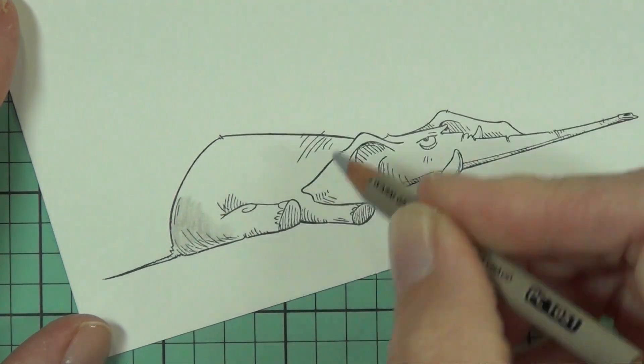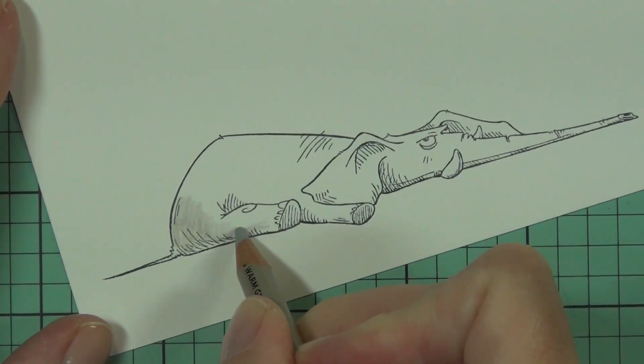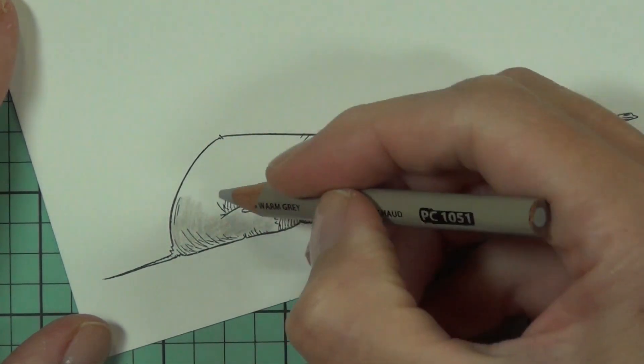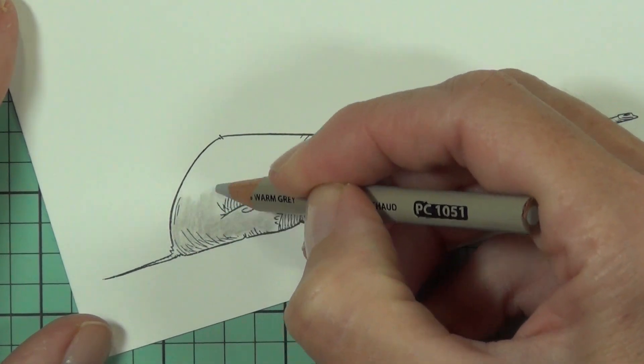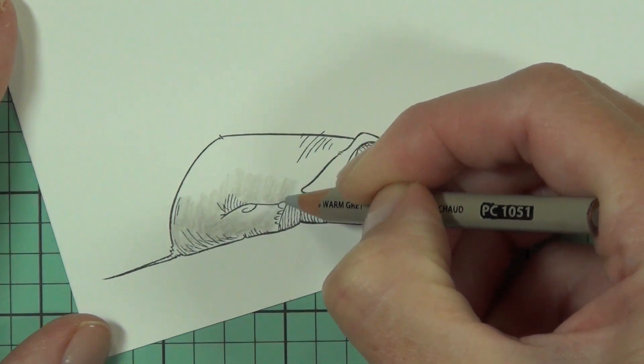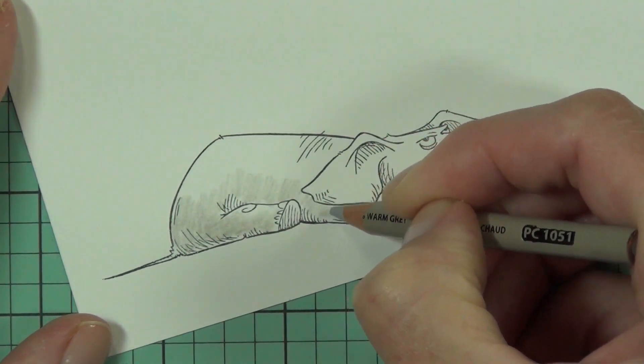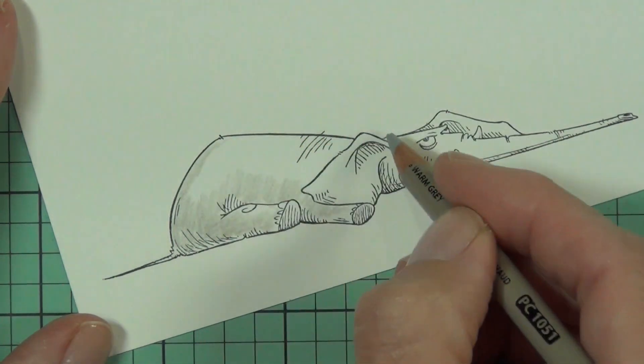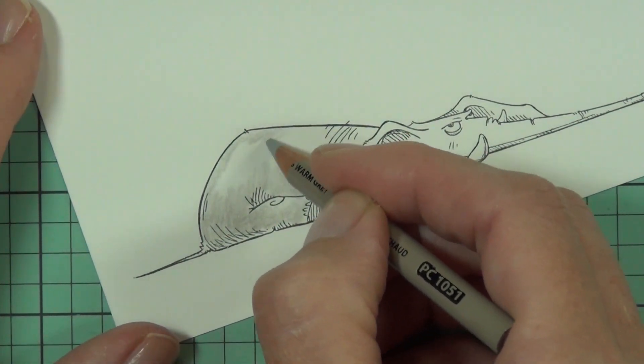use it like a clear stamp, except that you can't see the image exactly, so I just sort of guessed that it was straight. But if you wanted to be perfectly sure, you could use a tool like a MISTI or a Stamp-a-ma-jig. I'm going to be coloring with my